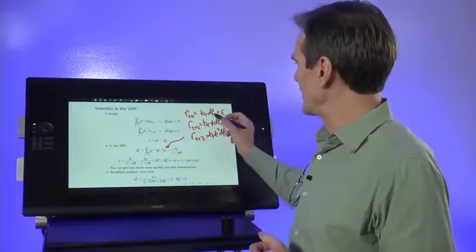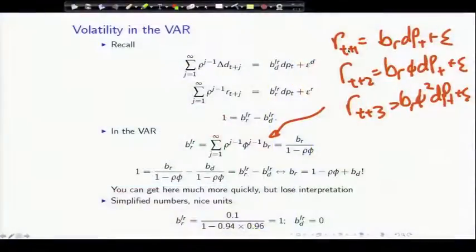I added a few equations just to make it clear. The one-period return forecast is br*dp. The two-period return forecast is br*phi times dp. The three-period return forecast is br*phi squared, and so forth.